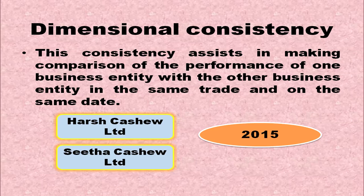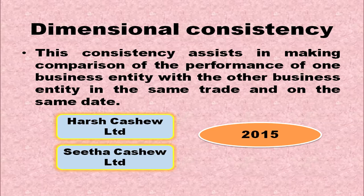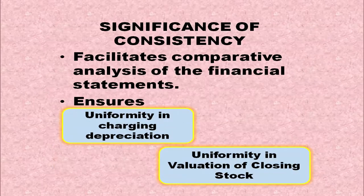For example, Harsh Cashew Limited and Sita Cashew Limited are both engaged in the cashew business in the same year, so comparison is possible with the help of the Convention of Consistency. The significance of the Consistency Principle: it facilitates comparative analysis of financial statements, ensures uniformity in charging depreciation, and ensures uniformity in the valuation of closing stock.